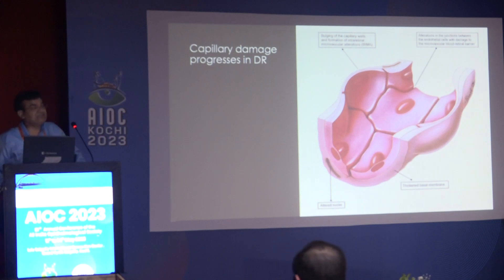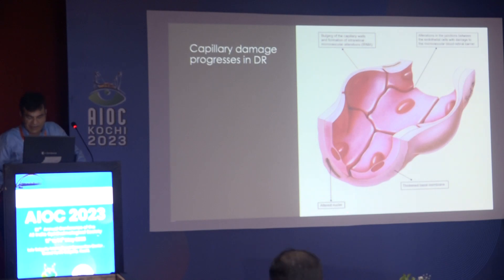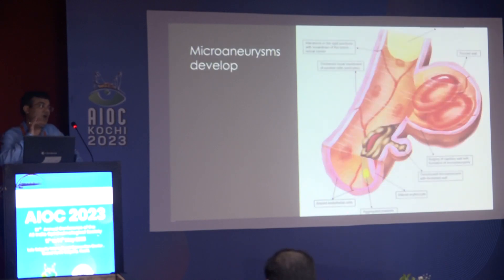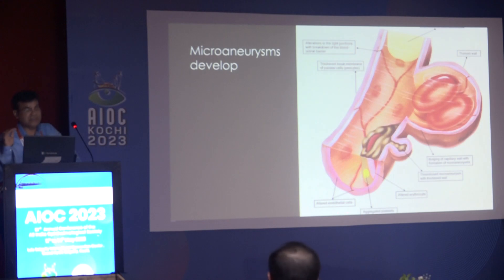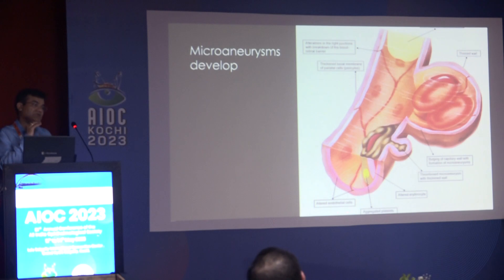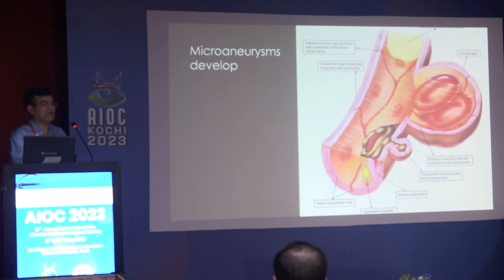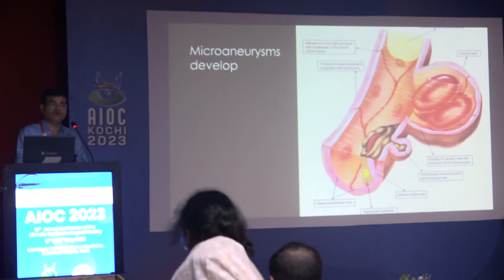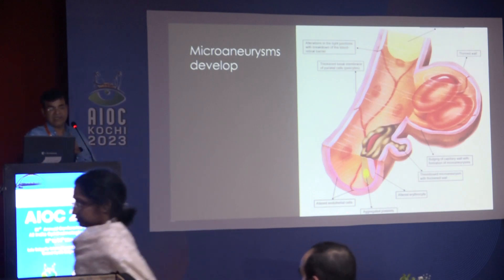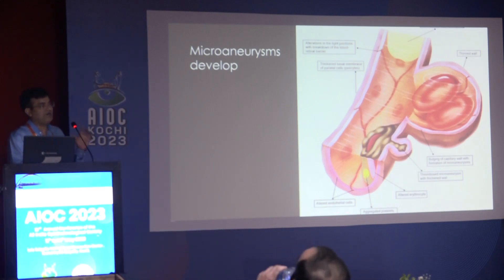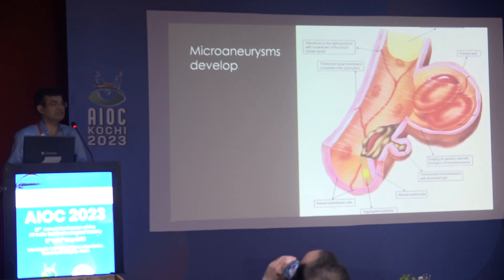This alteration in the tight junctions leads to breakage of the blood-retinal barrier and outpouching of the capillary walls. Because of this defect, the RBCs become more rigid. The moment they become more rigid, they start getting stuck to each other. The platelets start getting stuck to each other and this outpouching will have RBCs which get stuck inside, and you will see thrombosis happening.